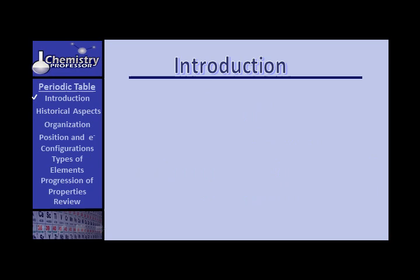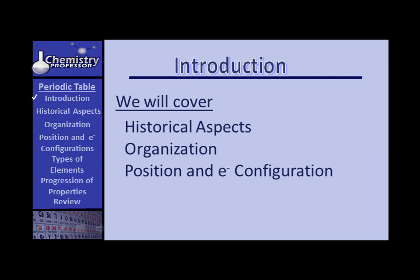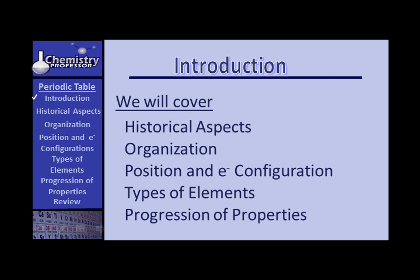In this unit, our discussion is going to be the Periodic Table. After a brief introduction, we're going to talk about some historical aspects of the development of the periodic table as we know it today, the organizational scheme on the table, the position of elements and their electron configurations, and how the two relate. We'll talk about types of elements and the all-important progression of properties when we deal with such things as ionization potentials, electron affinities, isoelectronic series, and all manner of things of that type.